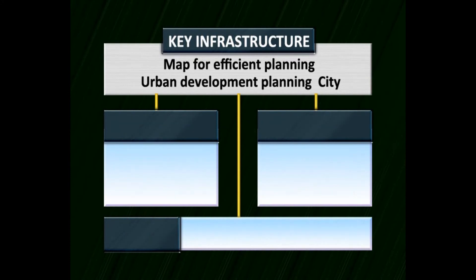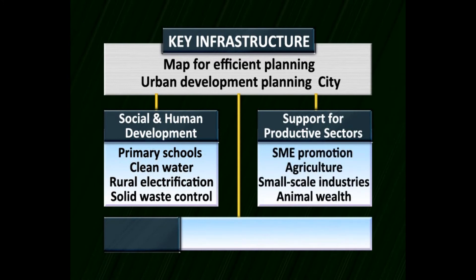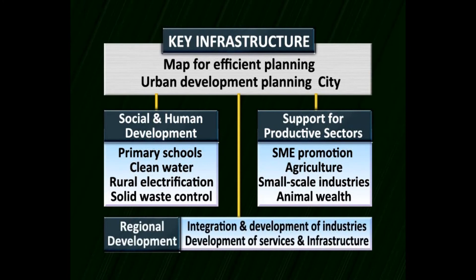This diagram is a map for efficient urban planning. Social and human development requires primary schools, clean water, rural electrification, and solid waste control systems. Support for productive sectors involves promotion of small-scale industries, agriculture, horticulture, other local industries, and animal wealth upgradation. Regional development involves the integration of industries, development of services, and infrastructure.